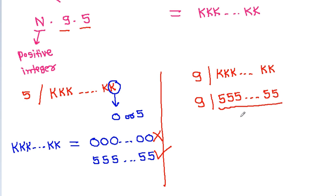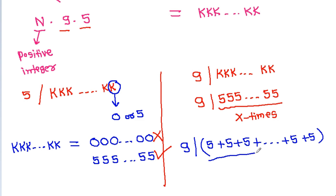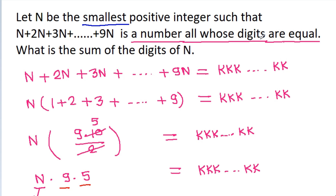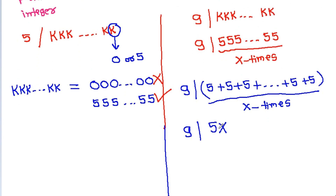Suppose 5 appears x times. Since 9 divides any number only if 9 divides its digit sum, we need 9 to divide 5x (which is 5 added x times). Since n is the smallest positive integer, the smallest value of x for which 9 divides 5x is clearly x equals 9.